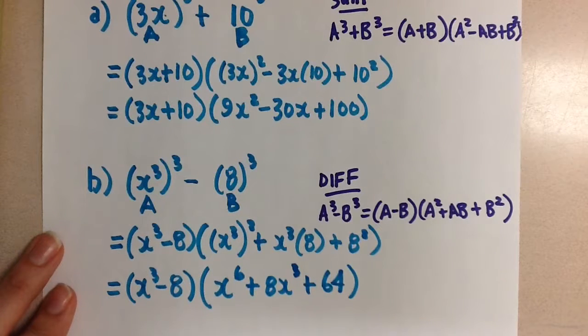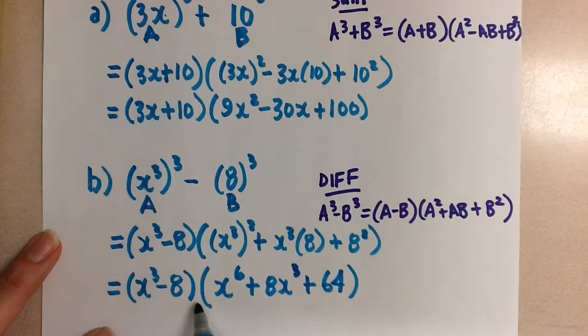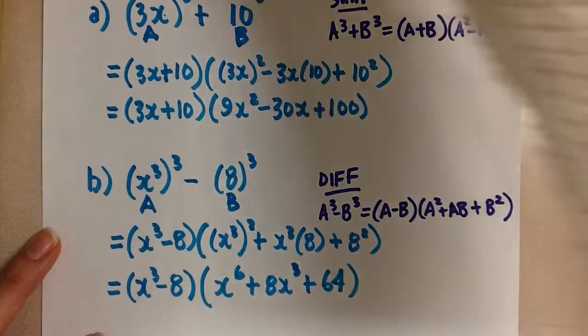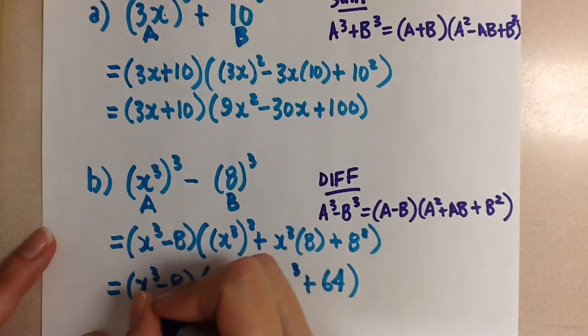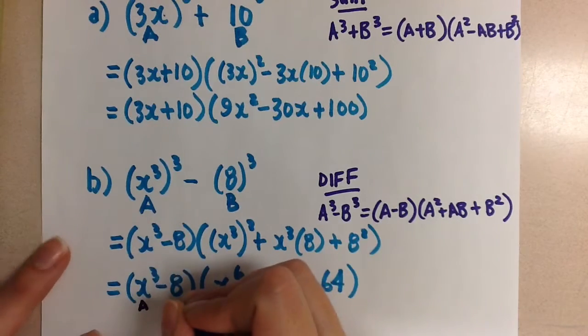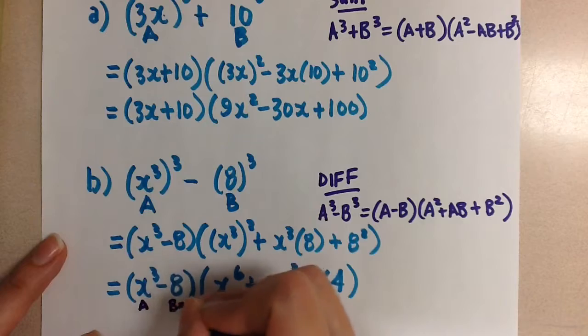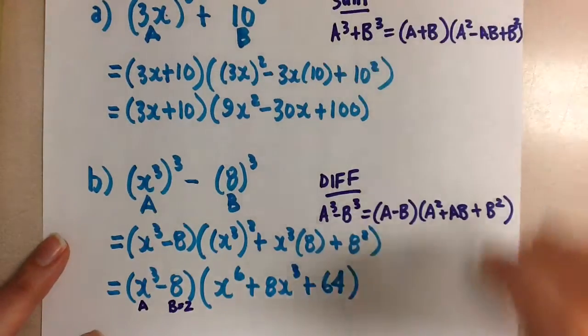Normally we would stop here, but I'm looking at this first factor, and I notice something here. This is another difference of cubes. So we need to apply the formula again for this difference of cubes. Notice here that the a value would be x, and the b value would be 2 for our new difference of cubes.